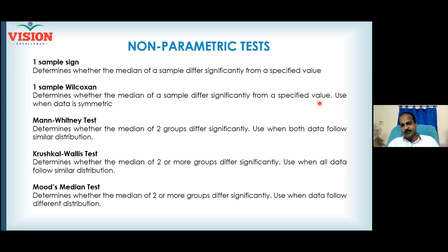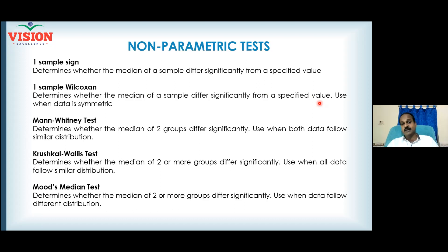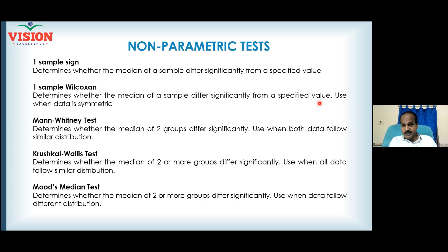There are many tests and we won't discuss all of them, but you should know that non-parametric tests exist. Median is a non-parametric measure. Whenever your distribution is not normal — right-skewed — non-parametric parameters can speak better.